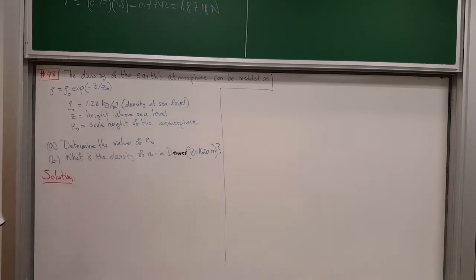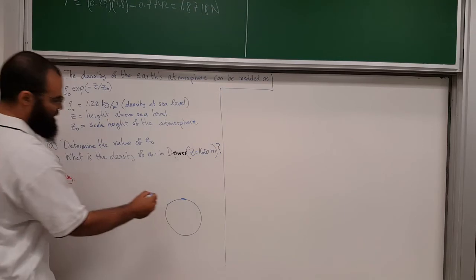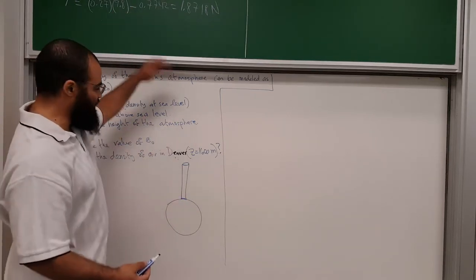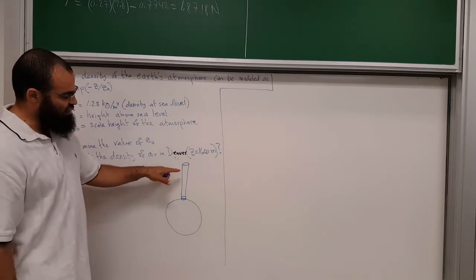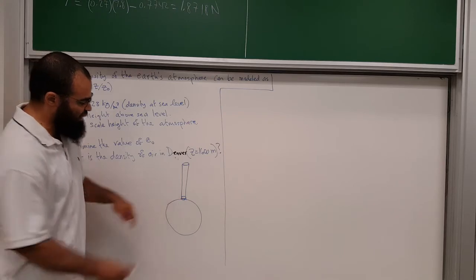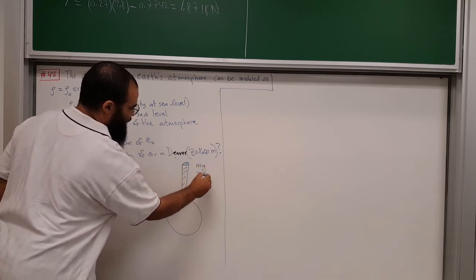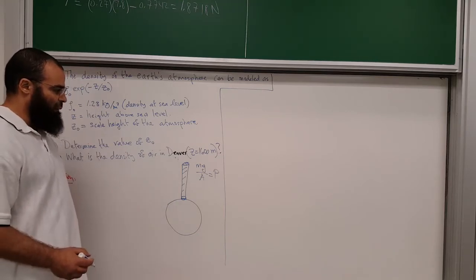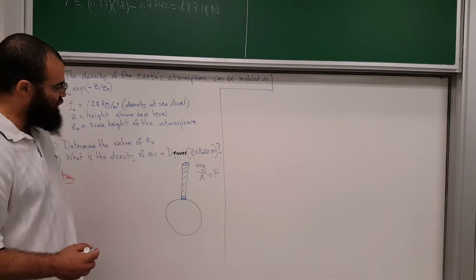Imagine an air column above a unit area from z = 0 to infinity. The weight of that column per unit area equals the sea-level atmospheric pressure: P₀ = 1.01 × 10⁵ Pa. So if we find the total mass M of that column, then P₀ = Mg/A gives us what we need.